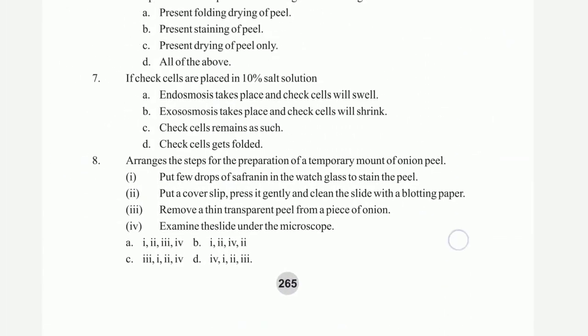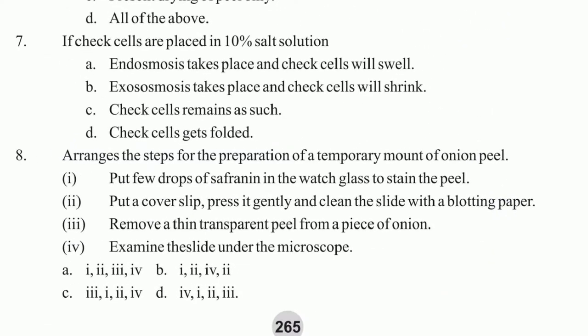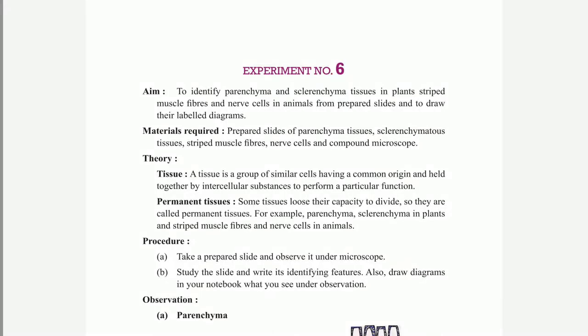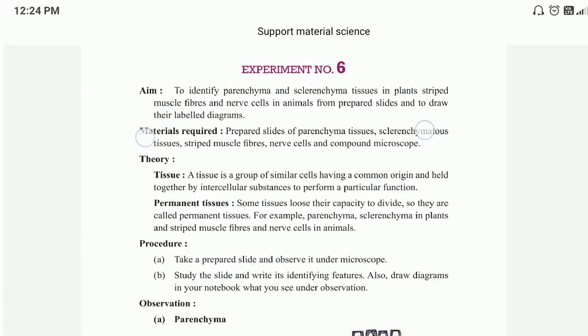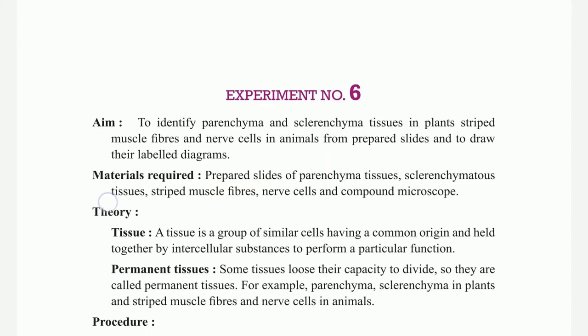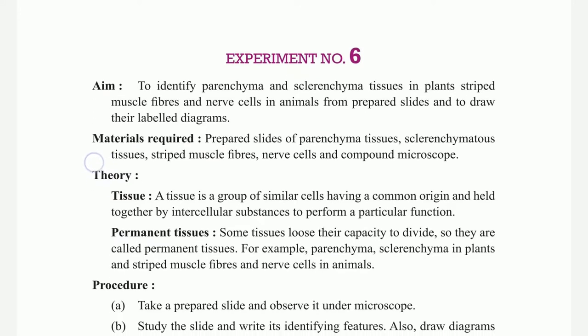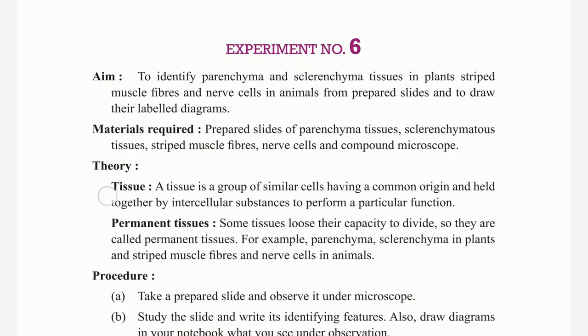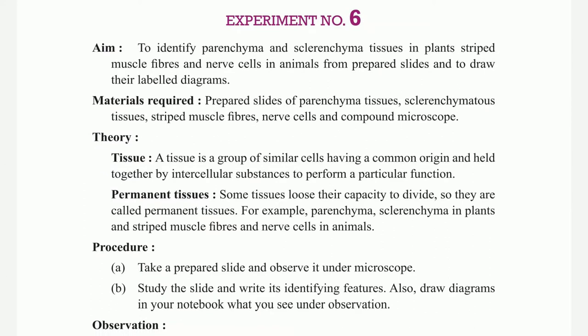Experiment number 6 is in the next video. Experiment number 6: to identify parenchyma, collenchyma tissue, striated muscle fibre, and nerve cell in prepared slides — draw their labelled diagrams. Materials required and tissue observations are shown.